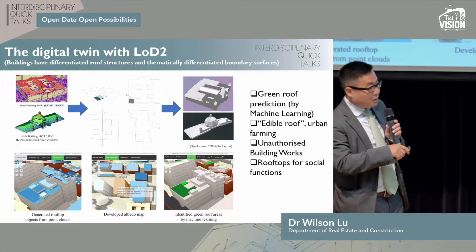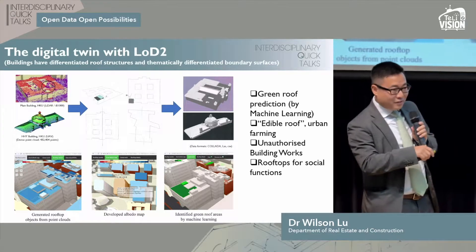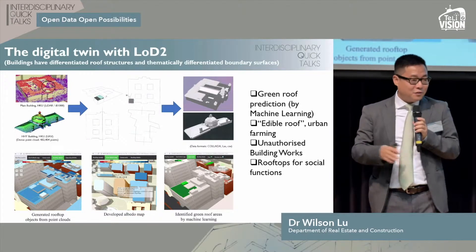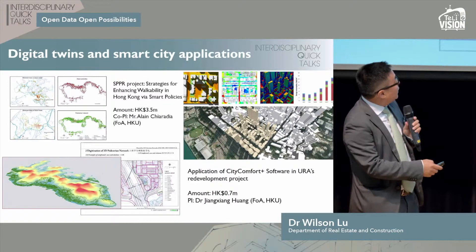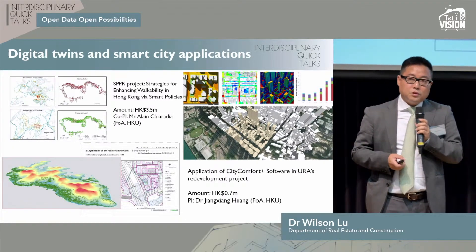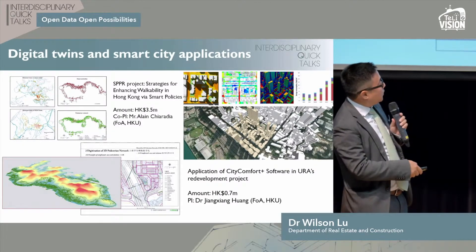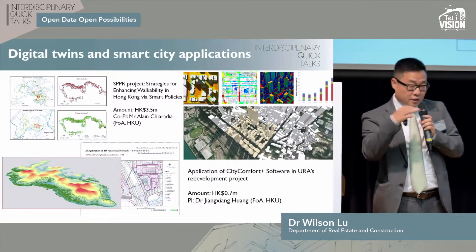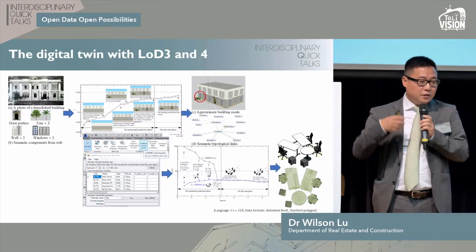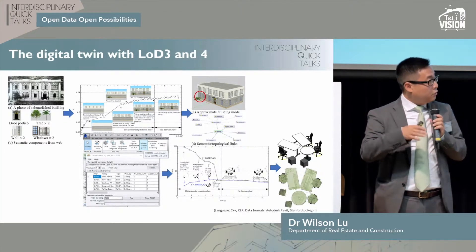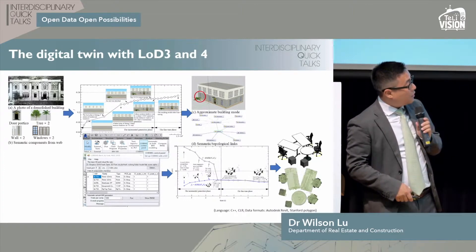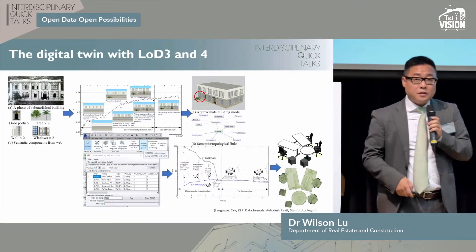Perhaps the index can be verified against unauthorized building works on rooftops — if there are many unauthorized works it may indicate other purposes. Some colleagues are also using the data to improve walkability in Hong Kong, and others are using it for urban planning. My team is also working to further detail the urban digital twin from LOD1 to LOD2, LOD3, and LOD4. Both projects have been funded by the Research Grant Council.